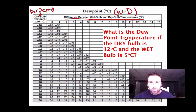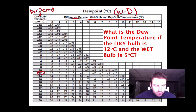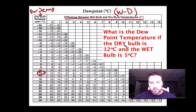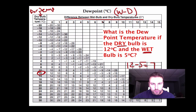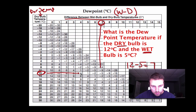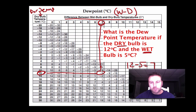In example B: what is the dew point temperature if the dry bulb is 12 degrees Celsius and the wet bulb is 5 degrees Celsius? First, go to the left side of the chart and find the dry bulb temperature — 12. Then find the difference between wet and dry bulb: 12 minus 5 equals 7. Go to the top of the chart and find 7. Where the two values meet is your dew point temperature — negative 5 degrees Celsius. Done, pretty easy.